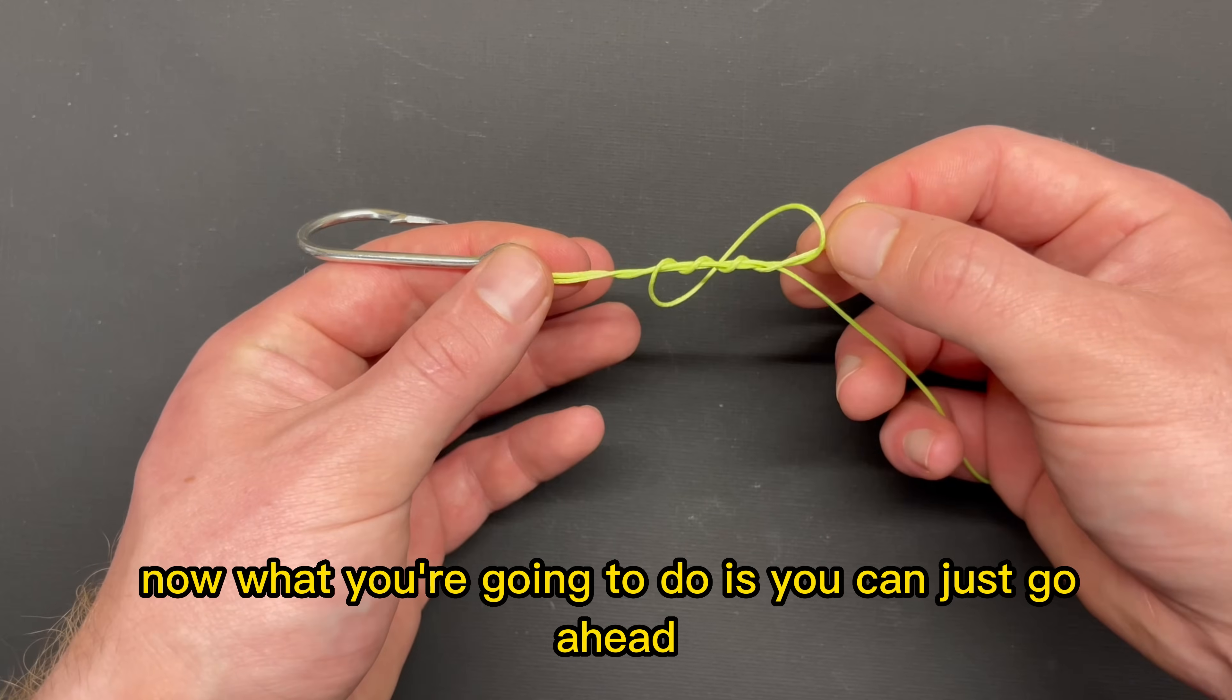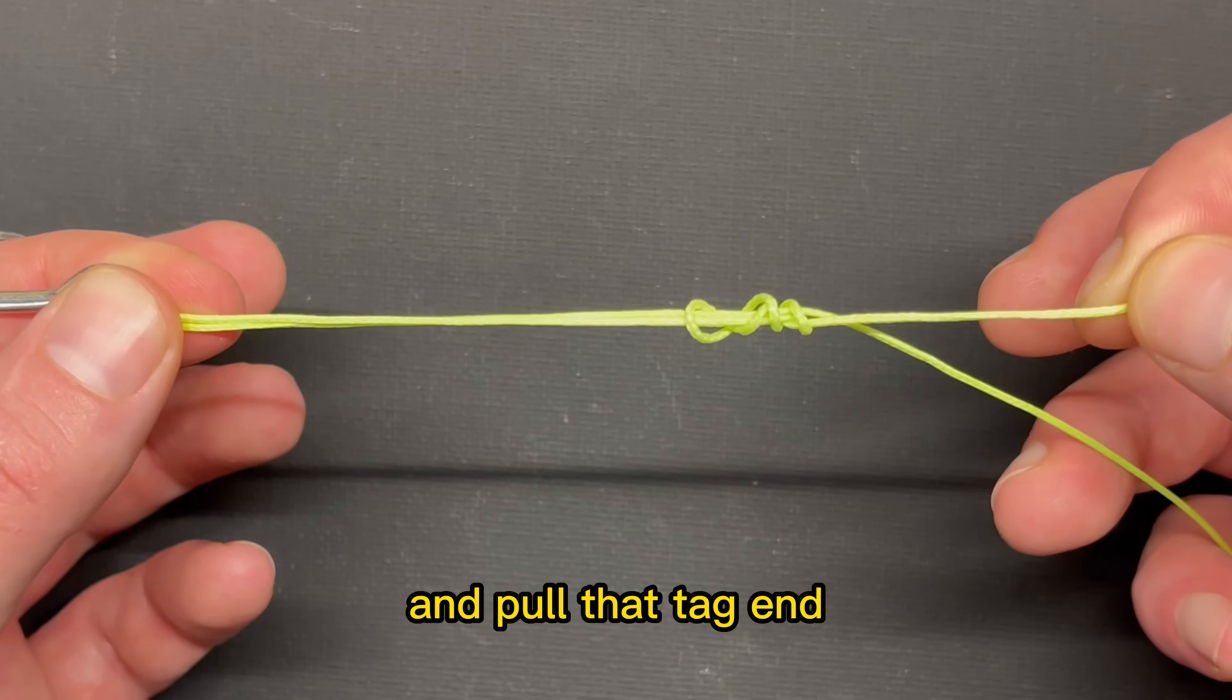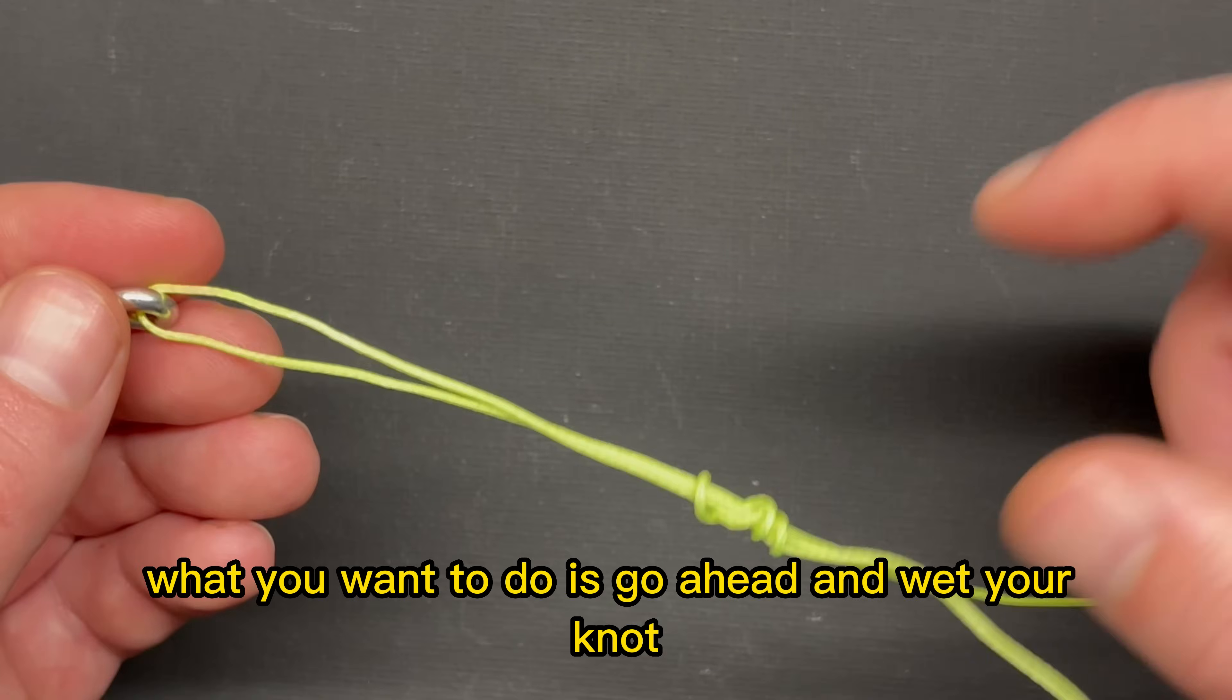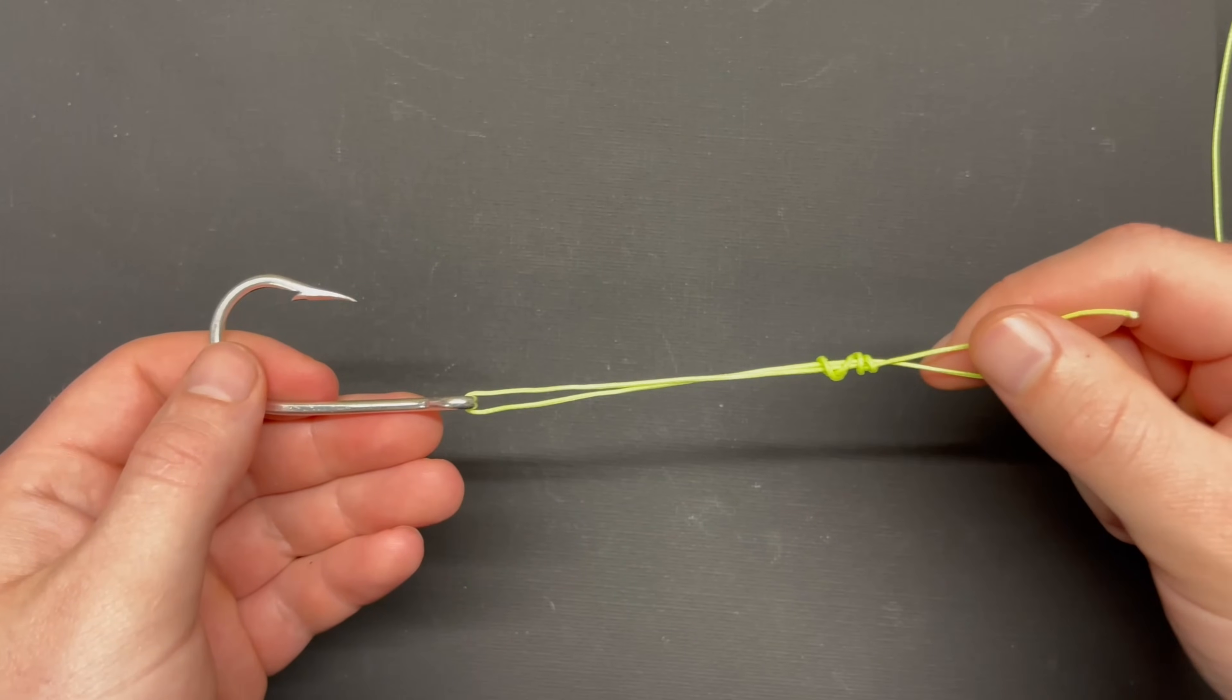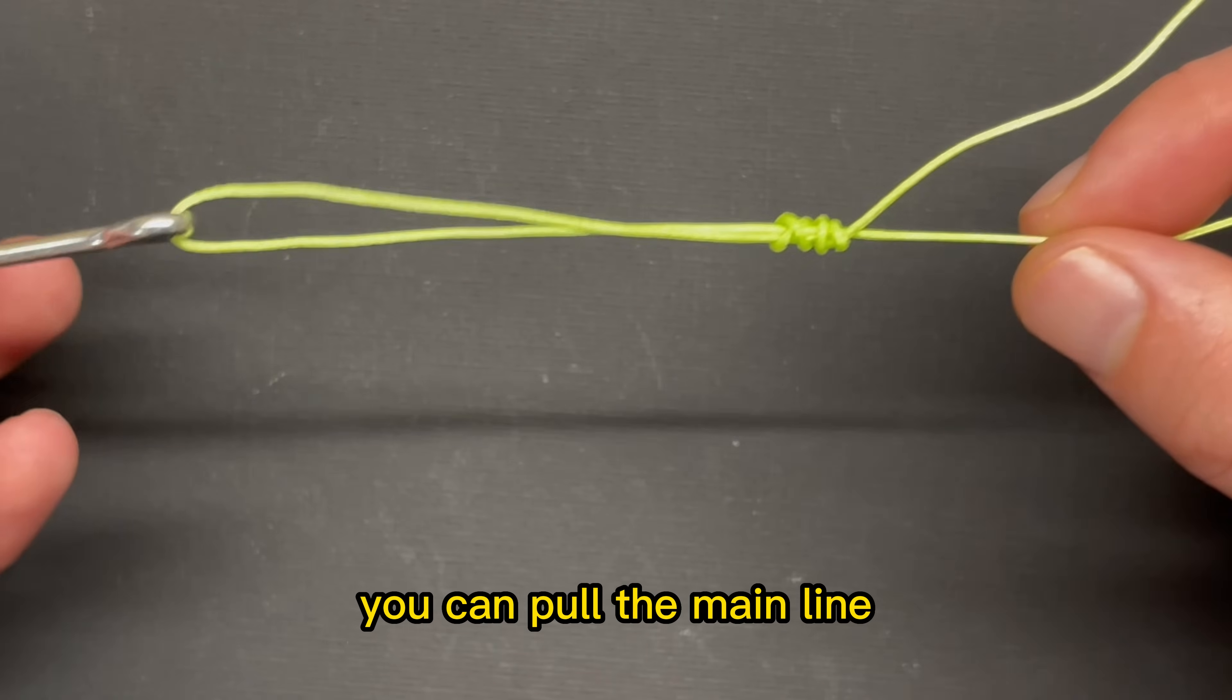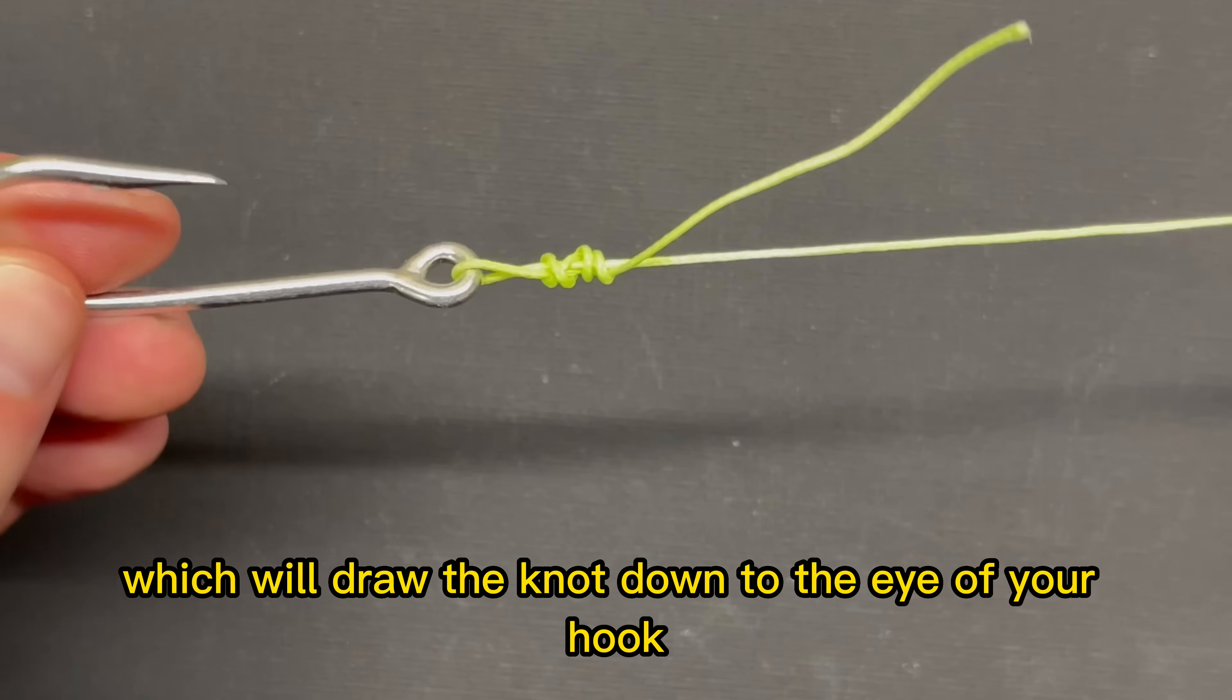Now you can just go ahead and pull that tag end. When that's most of the way cinched down, go ahead and wet your knot like always. Then before you take all the slack out here, you can pull the main line, which will draw the knot down to the eye of your hook.